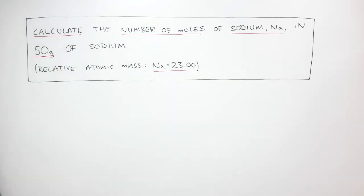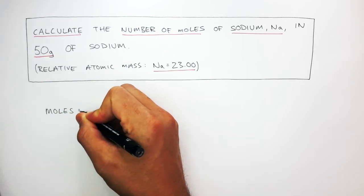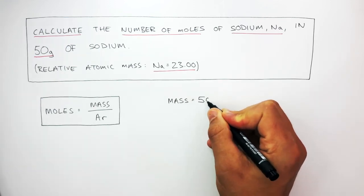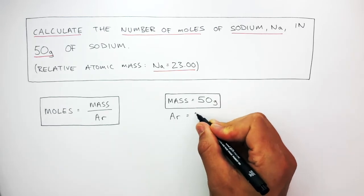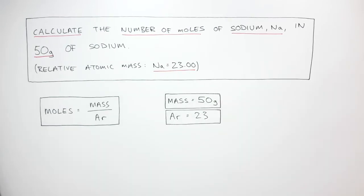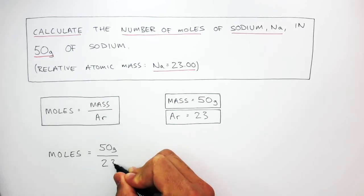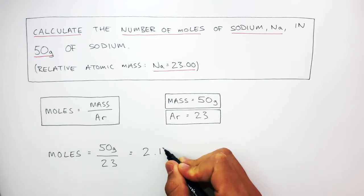The next step is to write down the equation: moles equals mass divided by AR. Always write down the equation for any calculation question in the exam. The mass equals 50 grams and the AR is 23. We then input this data into the equation, where moles equals 50 grams divided by 23, which equals 2.17 mole.